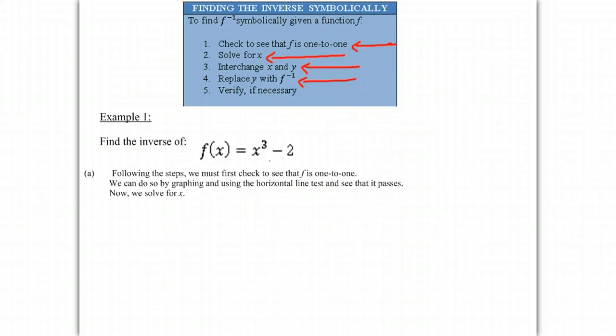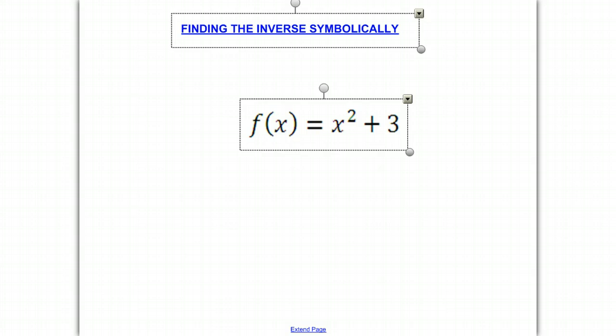We're going to be finding the inverse of f(x) = x³ - 2. What I want you to do right now is write this example, this equation, right on a piece of paper, and have that ready. Because as I start showing you how to find the inverse, you're going to be doing it for this problem while I'm working on my own problem. So write that down: f(x) = x² + 3.